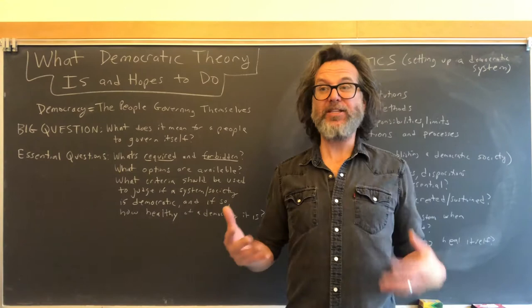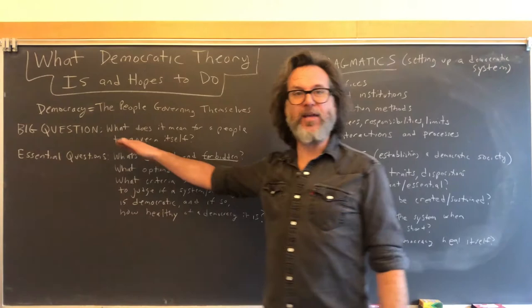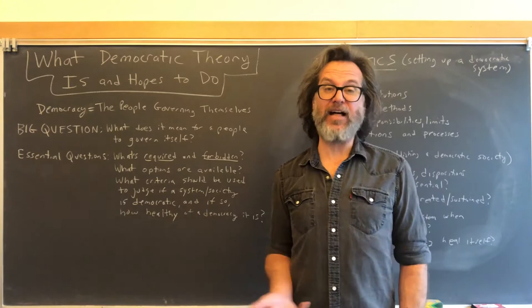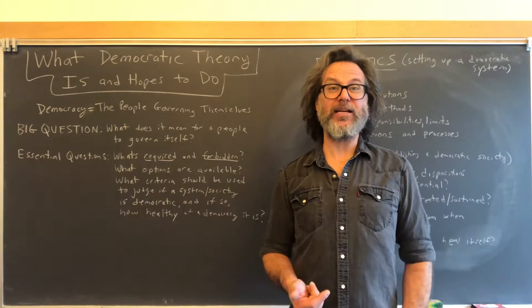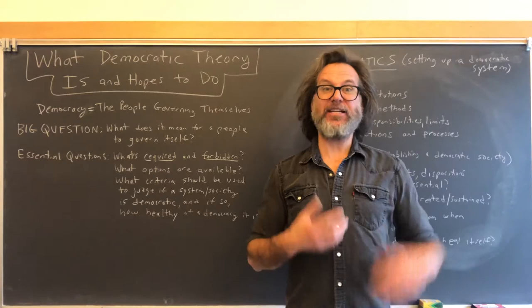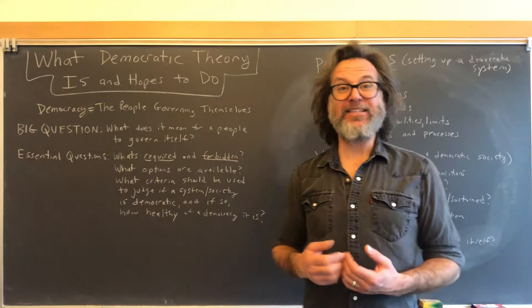Throughout the history of this word and of the analysis of democracy, there has been the open question of what really is a democracy? What does it mean for there to be a democratic system? I'm defining it as the people governing themselves. That is a more specific definition than just saying 'democracy,' which carries a lot of meanings and connotations, yet it still leaves a lot of unanswered questions — and in fact raises a lot of questions.